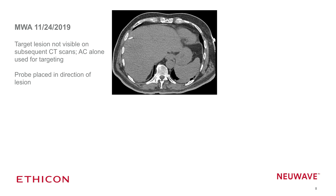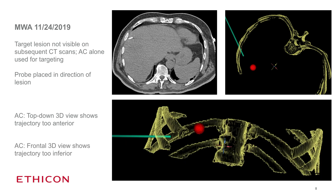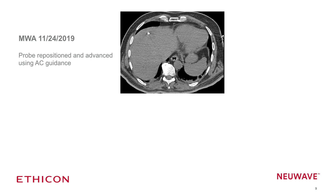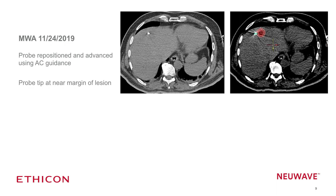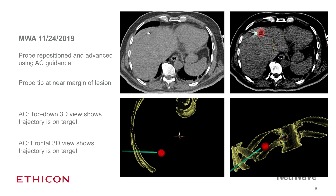I usually start by using ultrasound to get my probe into the liver in the correct general direction — even though I can't see my target, I get it pointed toward where I need to go. Then I use the ablation confirmation software. The three-dimensional views are quite useful: the top-down 3D view showed my initial trajectory was too anterior, and the frontal view showed it was also a bit inferior. I make adjustments based on ACS targeting, reposition the probe, and advance it. The ACS software then shows the probe is at the near margin of the lesion, on target in both the top-down and frontal views.